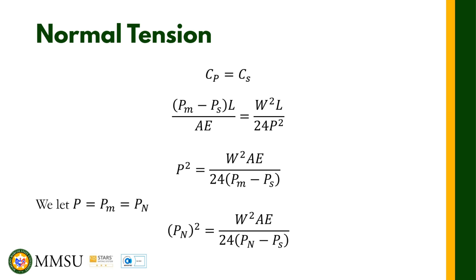This is the derivation of our equation. We equated the correction due to pull and the correction due to sag — that's C sub P equals C sub S. This is the formula for C sub P and this is the formula for C sub S. We equated them and we want P, the pull, to be a single variable. When they are equal, that's the normal tension. Looking at the equation, there is P sub N on the left side and also on the right side, so usually the approach here is trial and error.